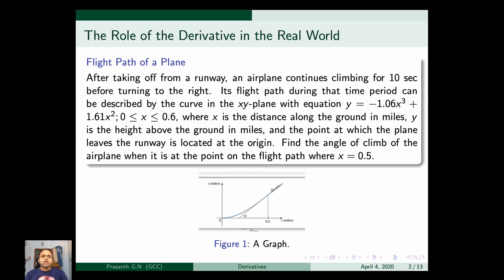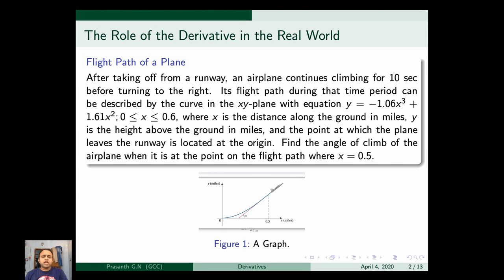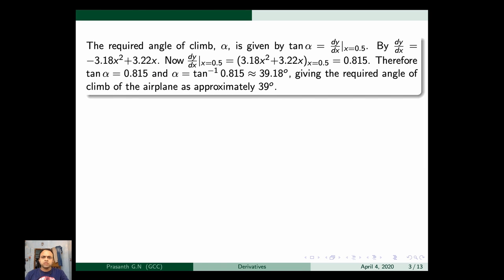Find the angle of climb of the airplane when it is at the point on the flight path where x = 0.5. So after 0.5 miles, we want to check the angle of the plane. The required angle of climb alpha is given by tan(alpha) = dy/dx at x = 0.5. You know the connection between tan(alpha) and the derivative from previous classes.